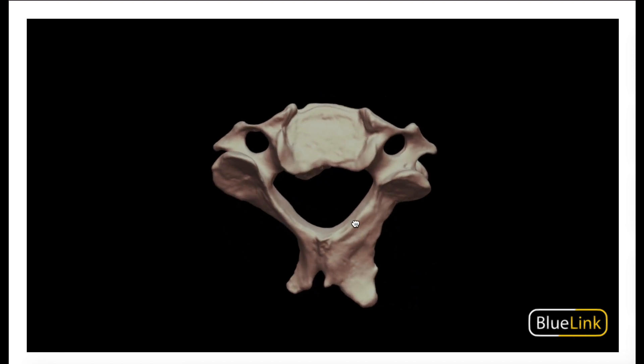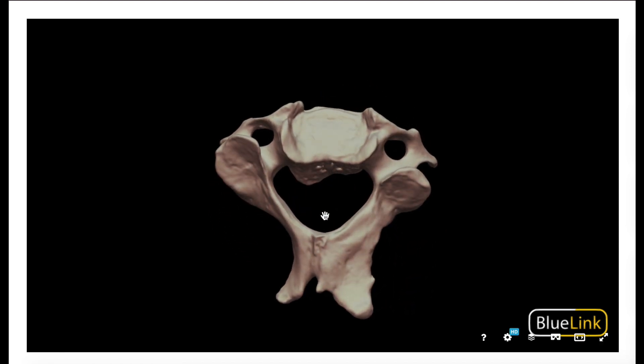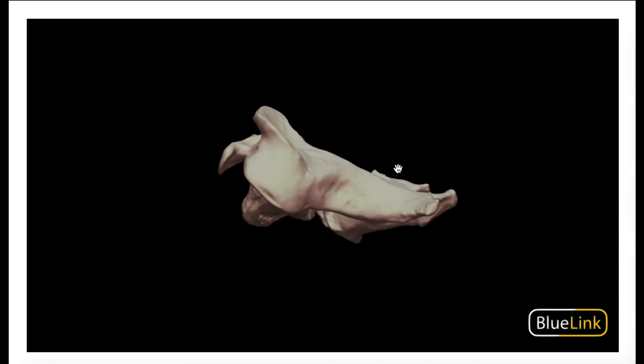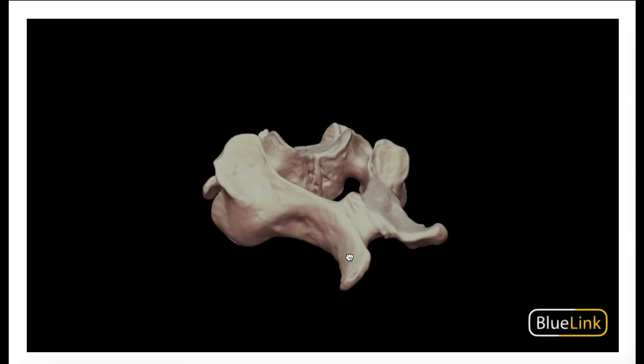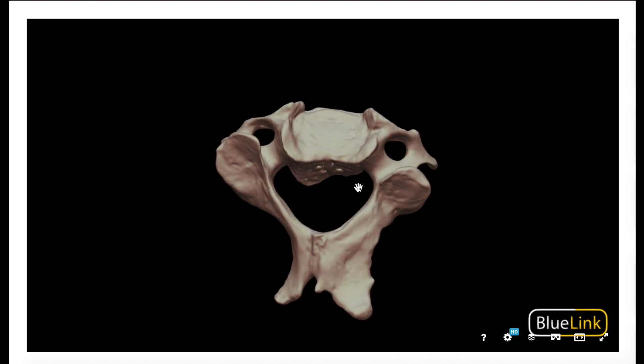This giant hole right here in the center is the vertebral foramen — this is the hole through which the spinal cord projects inferiorly. The spinal cord, part of the central nervous system, actually projects through this hole. If you imagine tons of vertebrae stacked on top of one another, you're basically going to have a large canal formed by all these vertebral foramina called the vertebral canal, and the spinal cord projects downwards.